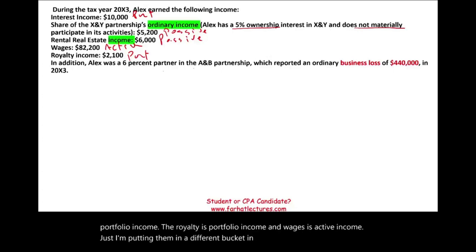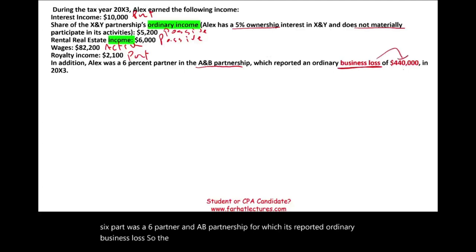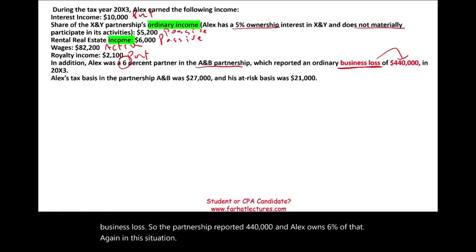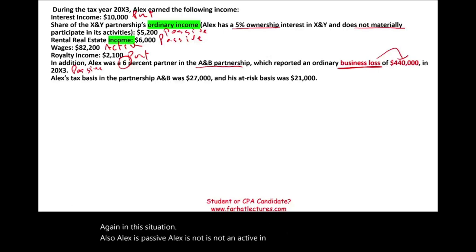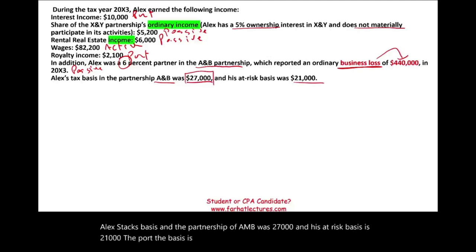In addition, Alex is a 6% partner in A and B partnership, for which it reported ordinary business loss. The partnership reported $440,000 of loss, and Alex owns 6% of that. Alex is passive — he is not active in this partnership. Alex's tax basis in A and B partnership was $27,000, and his at-risk basis is $21,000. The difference could be a non-recourse loan — at-risk basis is tax basis minus non-recourse liability.